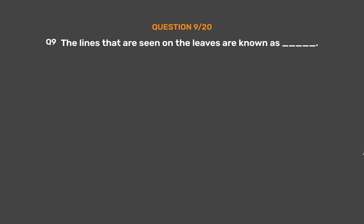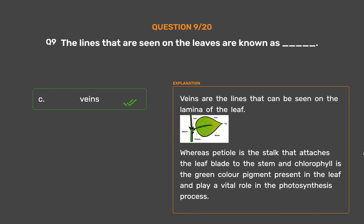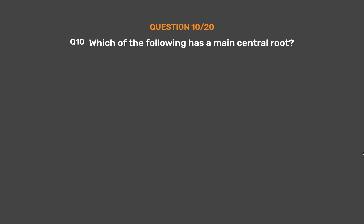Question 9: The lines that are seen on leaves are known as ___. Option A: Chlorophyll, Option B: Petiole, Option C: Veins, Option D: Axil. The correct answer is Option C, Veins. Veins are the lines that can be seen on the lamina of the leaf. The petiole is the stalk that attaches the leaf plate to the stem, and chlorophyll is a green-colored pigment present in the leaf that plays a vital role in the photosynthesis process.